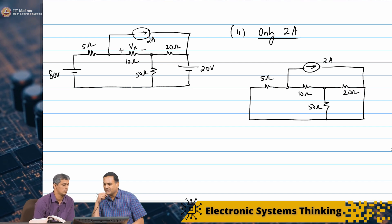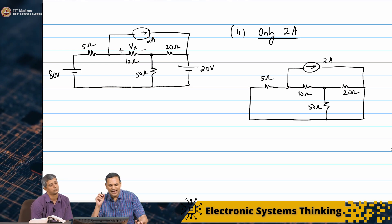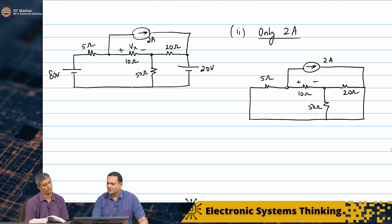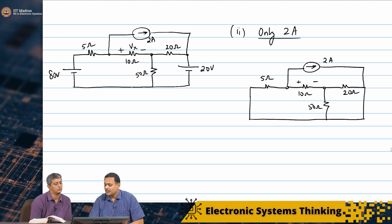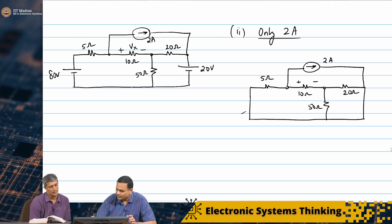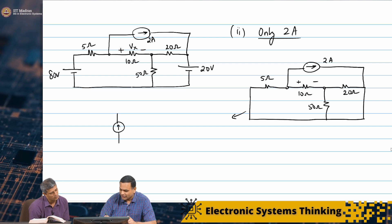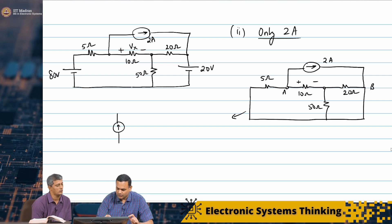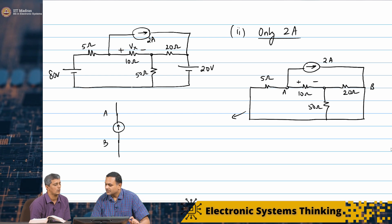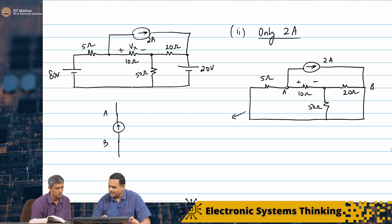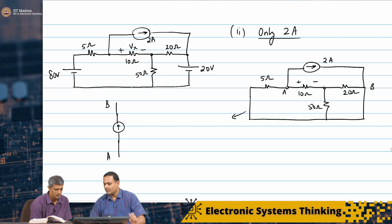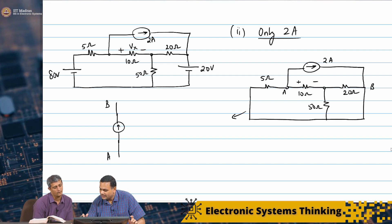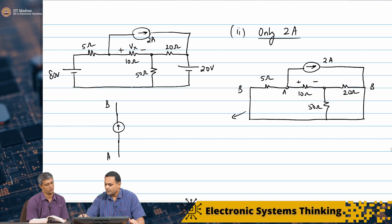I can see that 50 and 20 are in parallel, giving 1000 by 70, which is 100 by 7. I am still interested in this voltage. Let me redraw it vertically — let me name these nodes A and B. The current is going from A to B. From A I have a 10 ohm resistance; from B I have a 20 ohm resistance. So this is also node B.